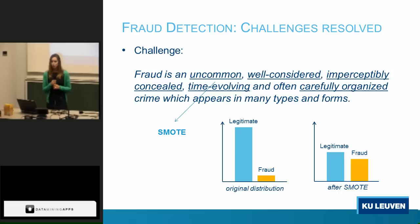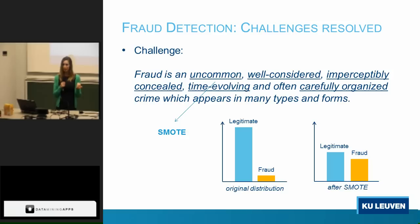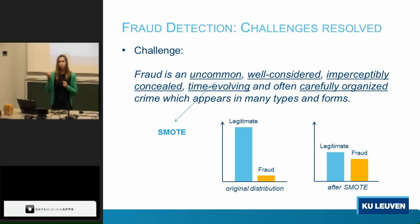SMOT is a technique that consists of two phases. In the first phase, we're going to undersample the majority class — in fraud detection, that means reducing the number of legitimate cases by randomly selecting cases from the legitimate class. In the second phase of SMOT, we will oversample the minority class. Oversampling can be done in two ways: first, we can duplicate fraud cases; second, we can create artificial fraud cases, for example by taking the mean of two existing fraud cases. As such, we can rebalance the dataset and show the model that it should distinguish between fraud and non-fraud.